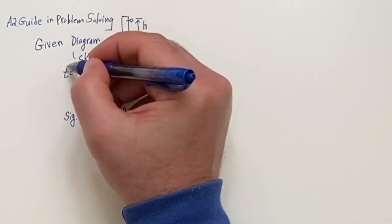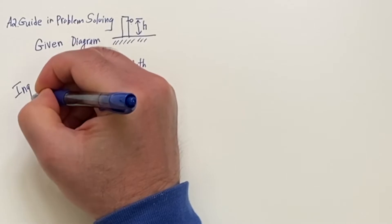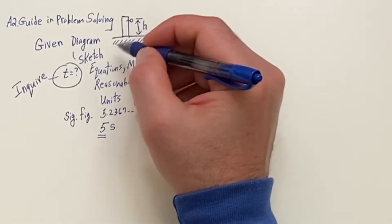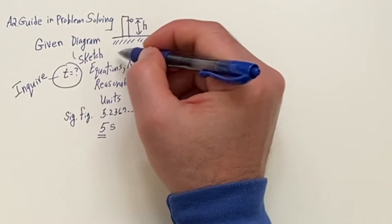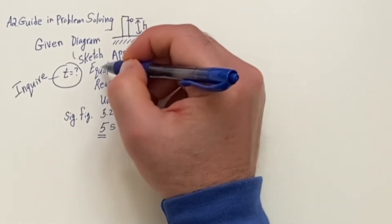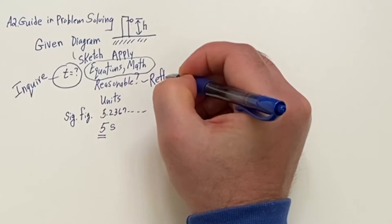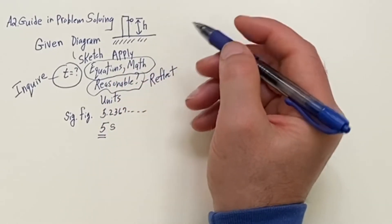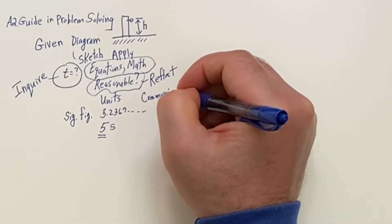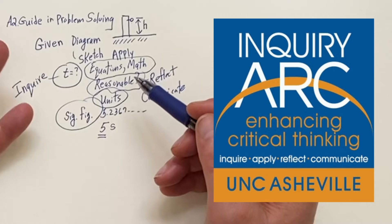Here's an example: the question is the time to drop the ball — that's your inquire stage. Then you apply, using your given and equations to do the math. Then for the reflect stage, you ask: is the answer reasonable? And in the communicate stage, you include units and significant figures.